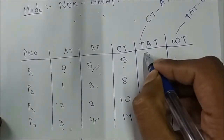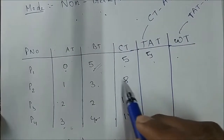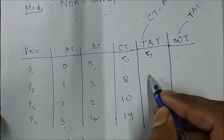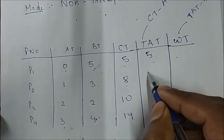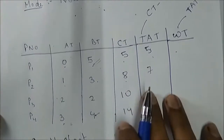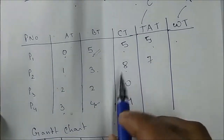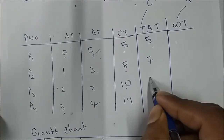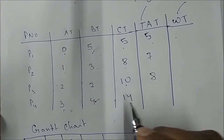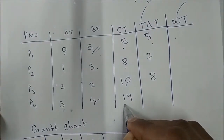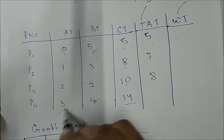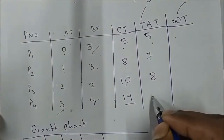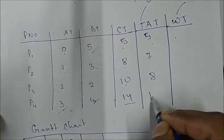For P1: completion time 5, arrival time 0 → TAT = 5 − 0 = 5. For P2: 8 − 1 = 7. For P3: completion time 10, arrival time 2 → 10 − 2 = 8. For P4: 14 − 3 = 11.